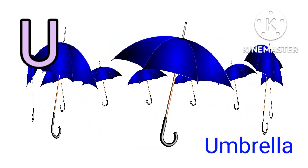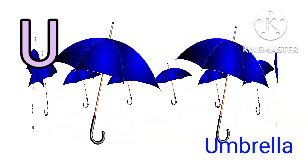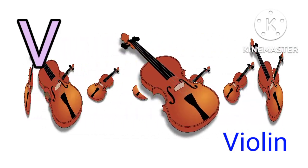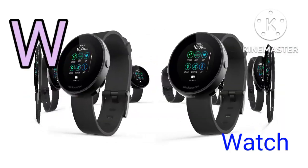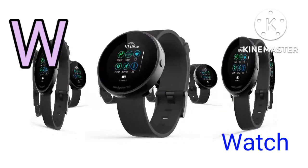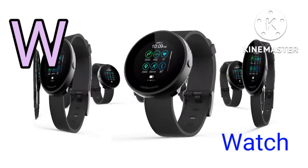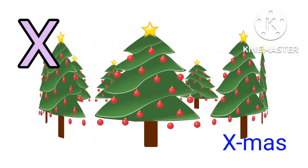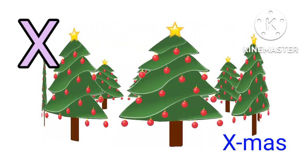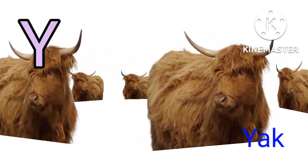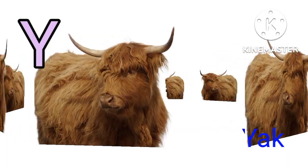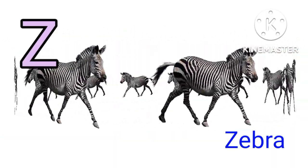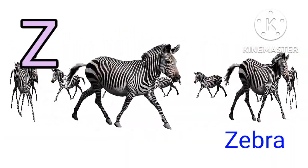U for Umbrella. V for Violin. W for Watch. X for Christmas Tree. Y for Yak. Z for Zebra.